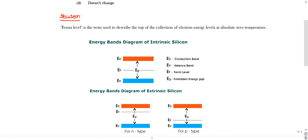Let us see the solution. First, you should know what Fermi level is. Fermi level is an energy level — it is the energy level of electrons. It indicates the energy level of electrons. Simply remember that Fermi level is nothing but the energy level of electrons.